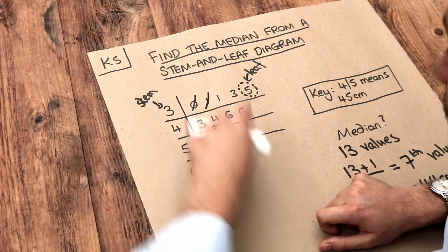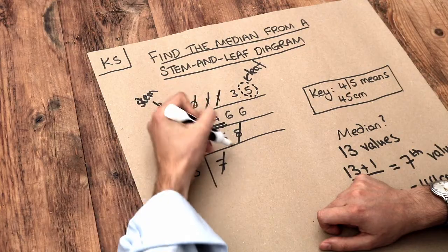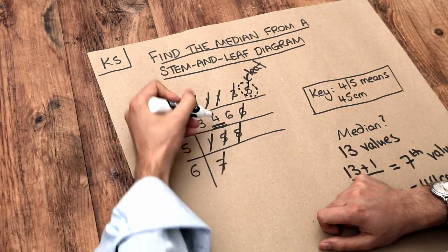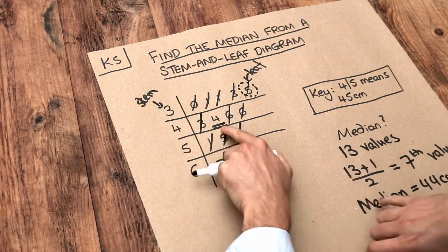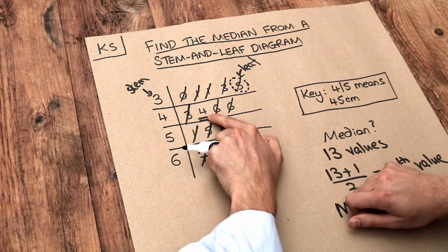So move along one, move back one, and then move forward one, move back one, forward one, back one, forward one, back one, forward one, back one. And we've arrived in the middle and we can see we've got 44 centimeters.